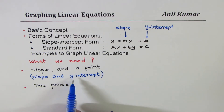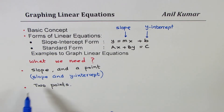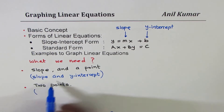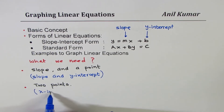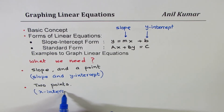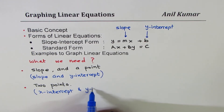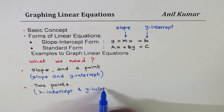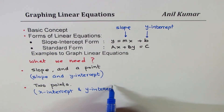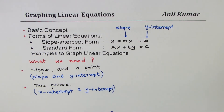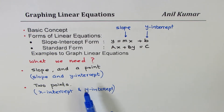Instead of any general point, we'll take the y-intercept. And when we talk about two points, we'll take the special case of x-intercept and y-intercept. So these are also two points. These are the two specific conditions which help us to draw or sketch lines easily.